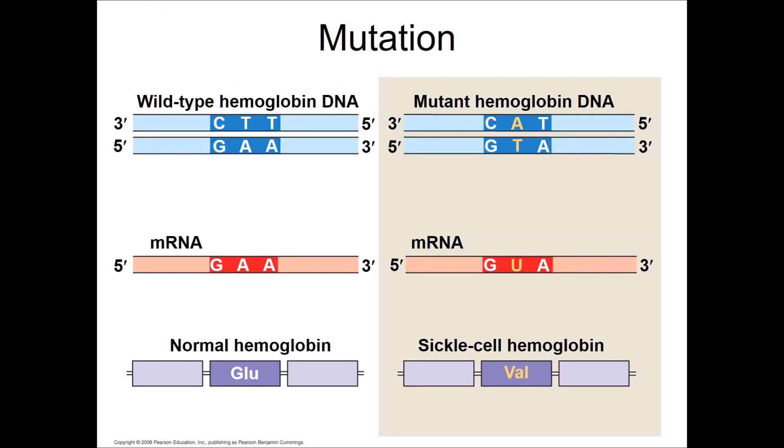The next few slides will connect a mutation in DNA to a differently functioning protein that gives a phenotype. Comparing wild type to mutant hemoglobin, we see a single point mutation converting a T to an A and an A to a T on the opposite strand. This results in an mRNA sequence that is GUA rather than GAA. The ribosome and tRNAs will translate GAA as glutamic acid, a polar amino acid that is also a neurotransmitter and the delicious part of MSG. The mutant version is read as valine, which is a non-polar, hydrophobic amino acid.